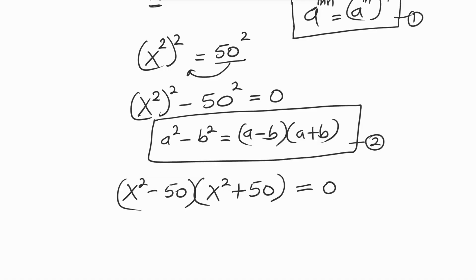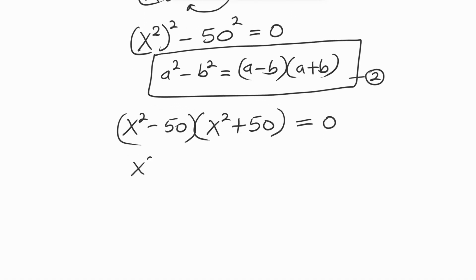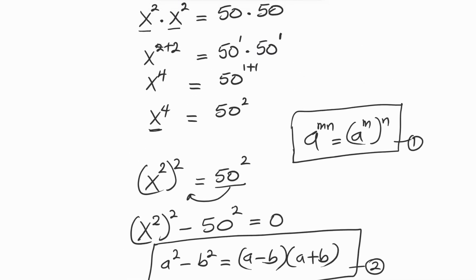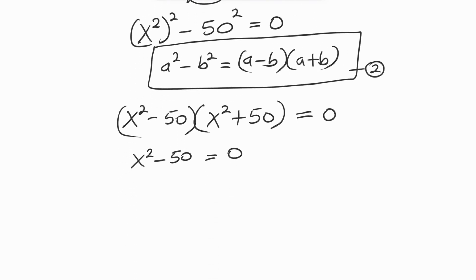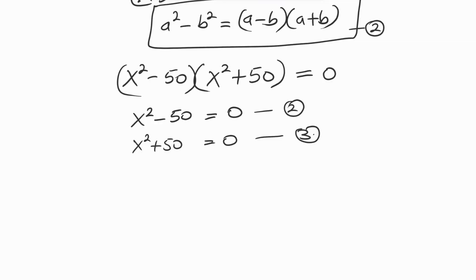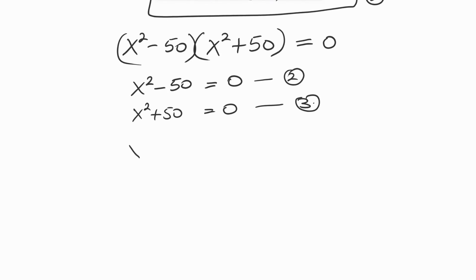Now we equate each factor to zero. We have x squared minus 50 equal to 0 — let's call that equation 2. And then we have x raised to power 2 plus 50 equals 0 as equation 3.